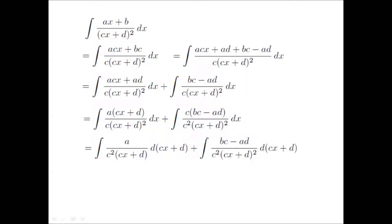In the first integral, cancelling the common factor cx plus d and multiplying by c in numerator and denominator, we get a divided by c squared times cx plus d times the differential of cx plus d. The second fraction becomes bc minus ad divided by c squared times cx plus d times the differential of cx plus d.